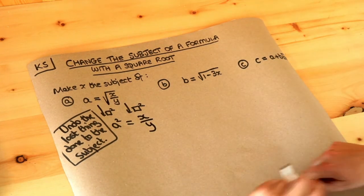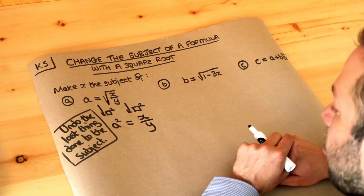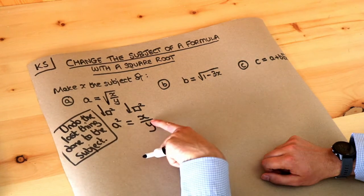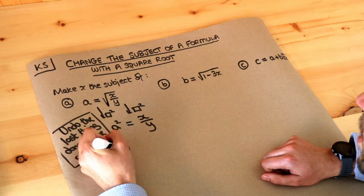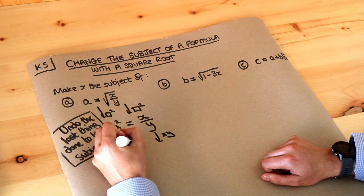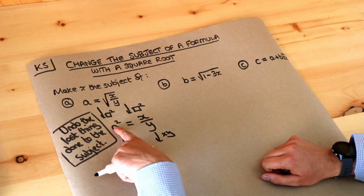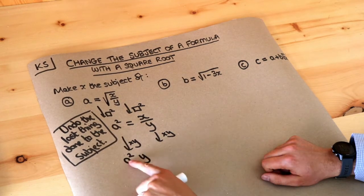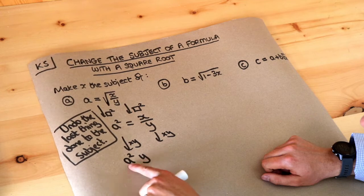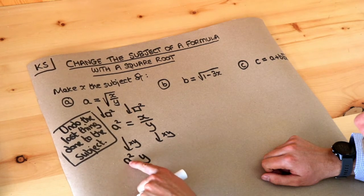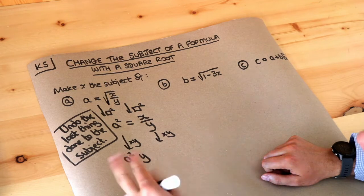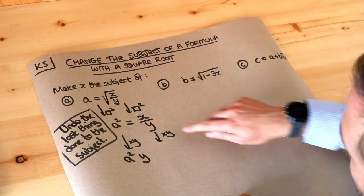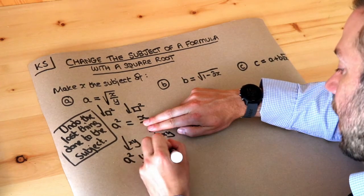Now we've dealt with the square root we can deal with the rest in the usual way. The story of x: it's been divided by y. So we undo that — the opposite of divide by y is times by y. So we times both sides by y. That gives a squared times y, noting the squared is on the a, not around the whole thing. We put terms in alphabetical order, so it's a squared y. Multiplying the right hand side by y gets rid of the over y, leaving x.